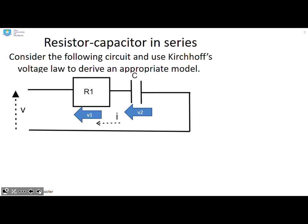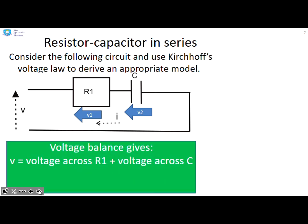What about a resistor capacitor in series? Here we're going to do a voltage balance. So you can see I've got an applied voltage V and that has to match the voltage across each component. The applied voltage V is the voltage across the resistor R1 plus the voltage across the capacitor C. So we end up with a formula V equals V1 plus V2.